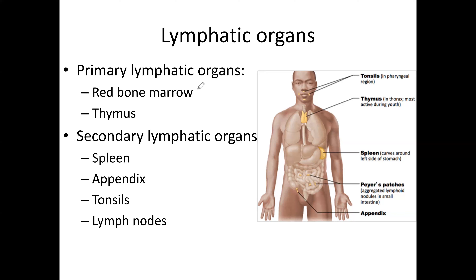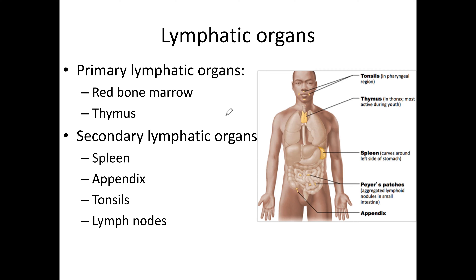The primary lymphatic organs are red bone marrow and the thymus. The thymus is a gland located just superior to your heart. Red bone marrow is found inside your bones, either in a cavity or between trabeculae of spongy bone.